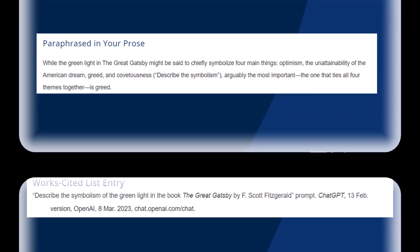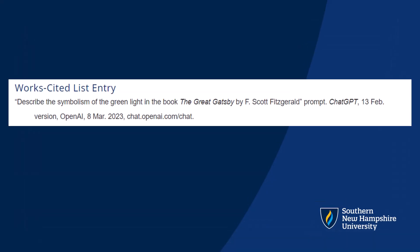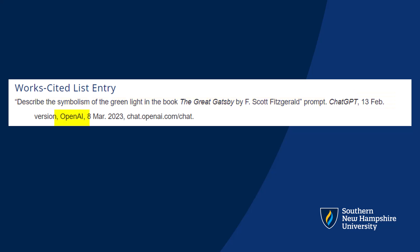For a works cited list entry, let's walk through the example on the screen. The prompt is listed as the title in quotes, followed by the tool in italics, the version use date, the parent company that created the tool, the date the prompt was generated, and the URL to access the prompt.